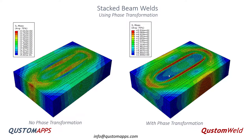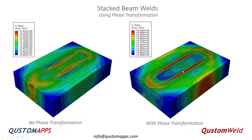Here's an interesting example where a beam weld is put down a block, showing the stress field after it has cooled down — with and without phase transformation. You can ignore the magnitudes since the materials are hard to compare, but what's really interesting is the profile of the high stresses. You get a very different type of stress profile when you actually include phase transformation.